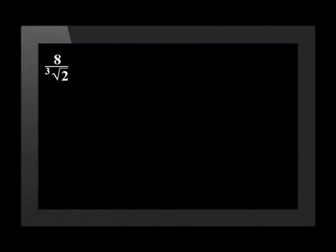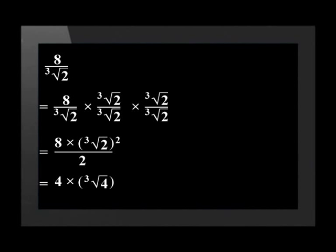8 over the cube root of 2. To rationalize the denominator we need to multiply the term by the cube root of 2 over the cube root of 2, twice. This gives a final answer of 4 times the cube root of 4.